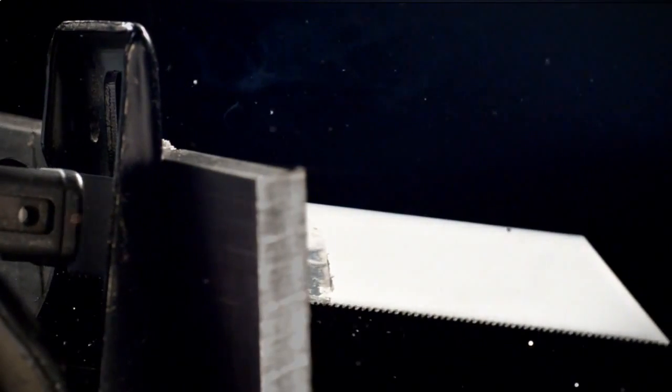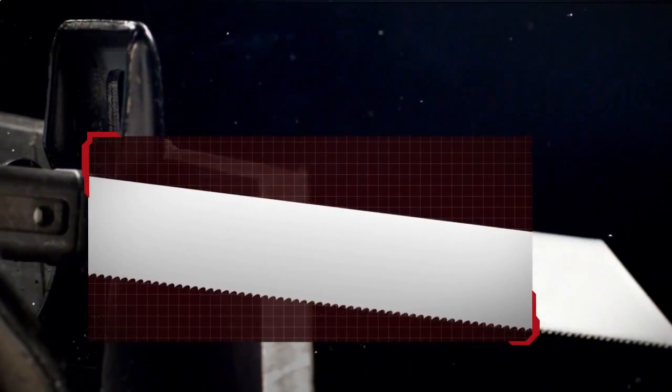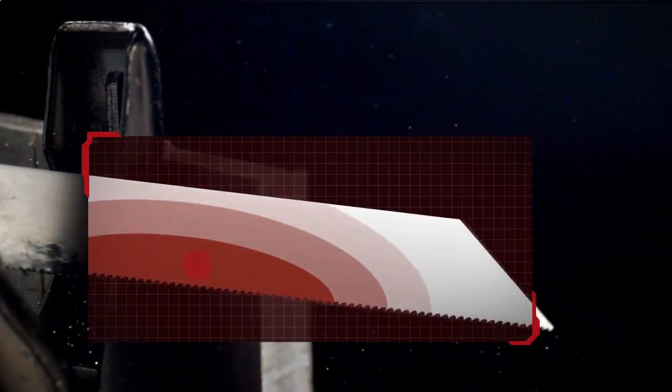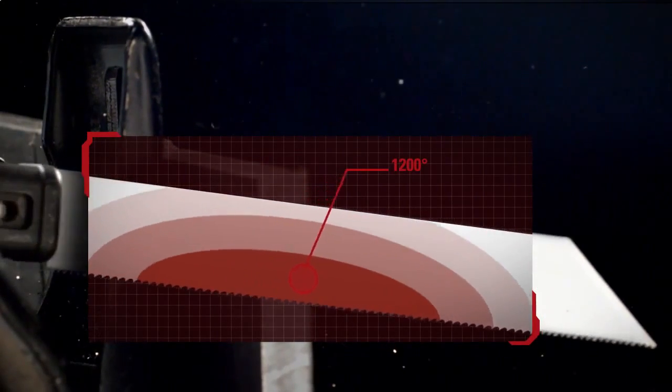On every cut, you're generating the number one killer of blades: heat. In extreme cuts, your blade has to withstand up to 1,200 degrees of heat that can weaken and melt even hardened reciprocating saw teeth.